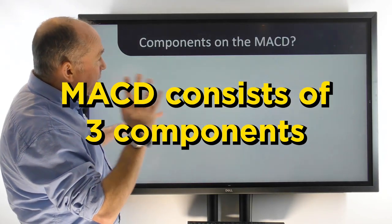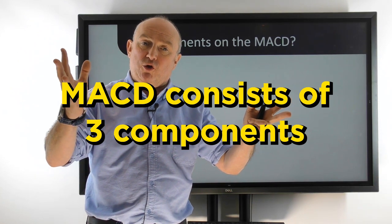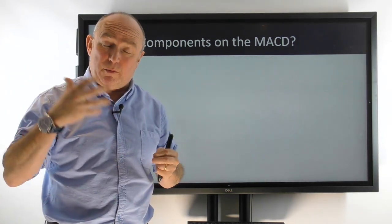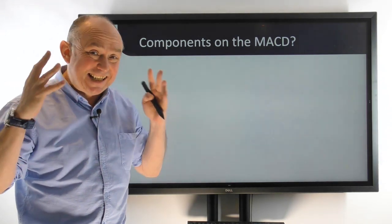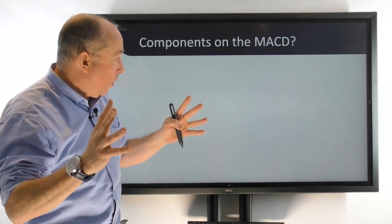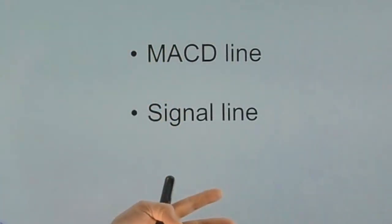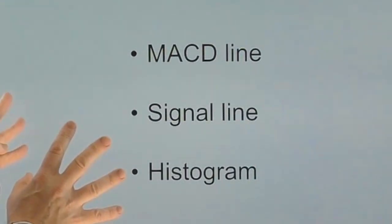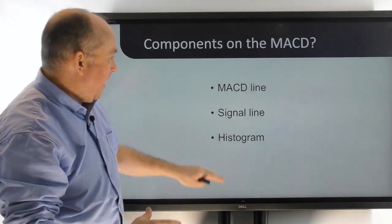The MACD is comprised of three components. When you load this up onto your chart, you're going to see three bits of information, and we're going to go through those in turn so that you understand exactly what is going on. First off, you've got the MACD line, the signal line, and the histogram.